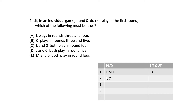In option B, O is placed in rounds 3 and 5. If O is in rounds 3 and 5, O will run rounds 3 and 5. You won't be able to play KM and LNH in those rounds.